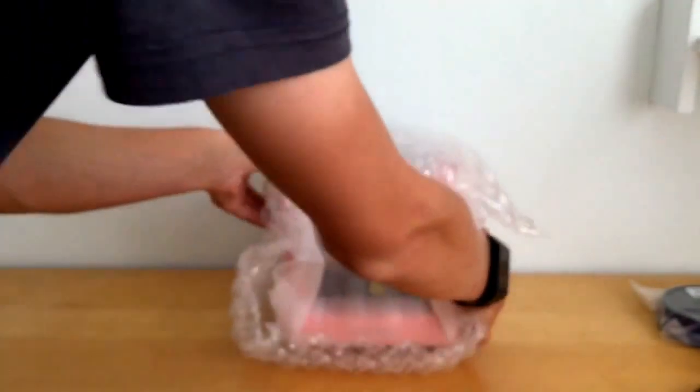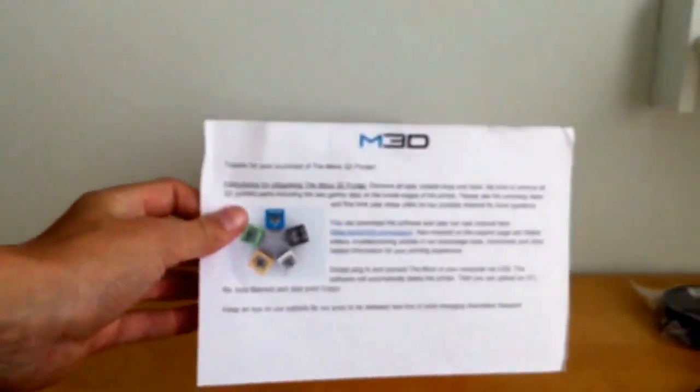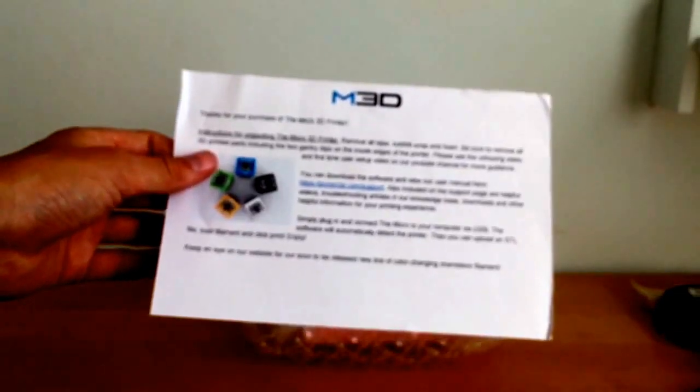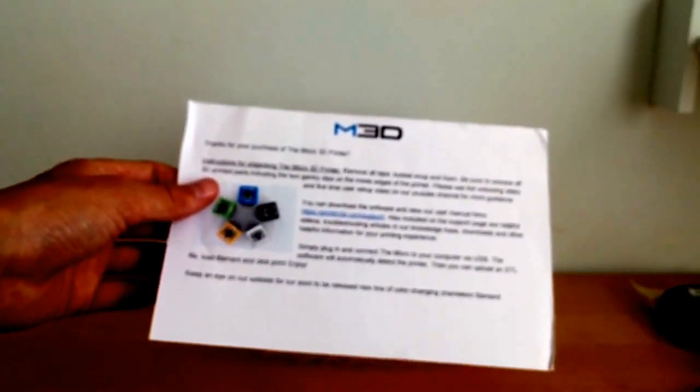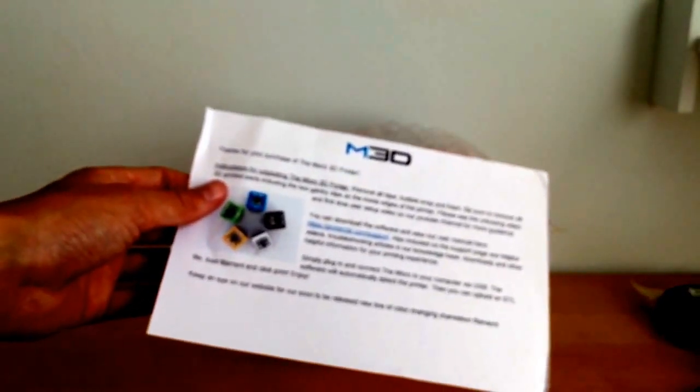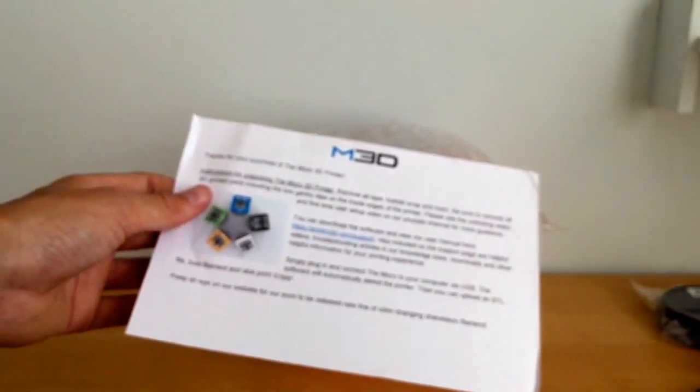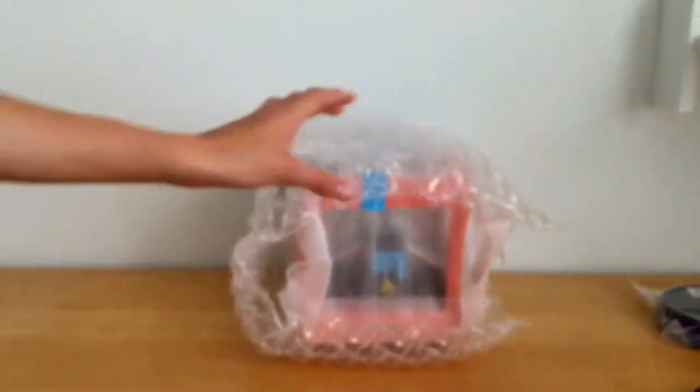This is the printer. So I think this says something about unpacking it - remove all tape, bubble wrap and foam. Be sure to remove all 3D printed parts including two gantry clips on the inside edges of the printer. I've watched lots of unboxing videos.